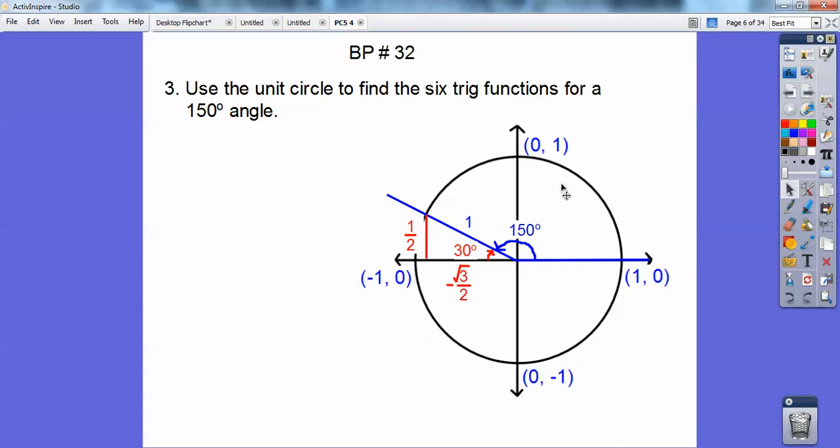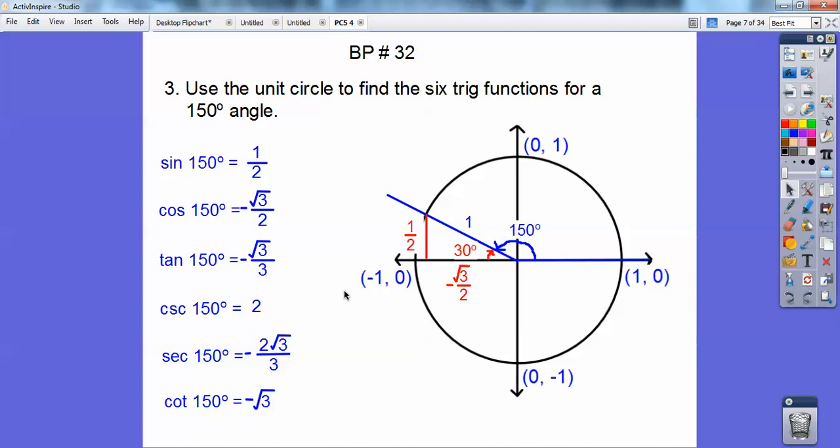Okay, here we go. So 150 is over here, so 150, the reference angle is 30. So remember, that's 1, so the shorter legs, root 2, or 1 half, and negative root 3 over 2. So find the six trigs. Okay, so sine is opposite over hypotenuse, cosine is adjacent over hypotenuse, and tangent is opposite over adjacent. There's my right triangle right there, and there's my six trig figures right there.